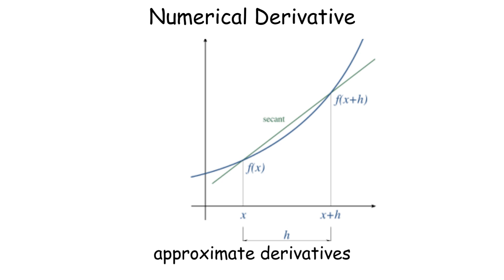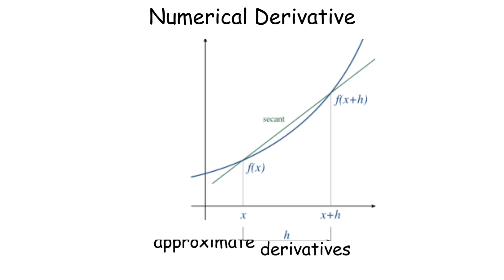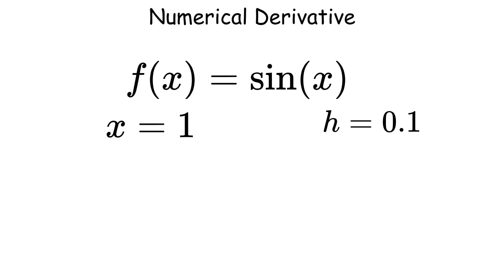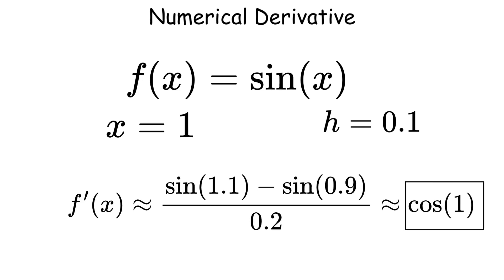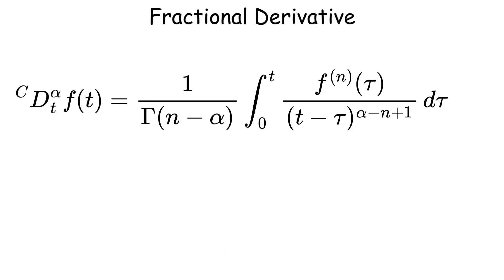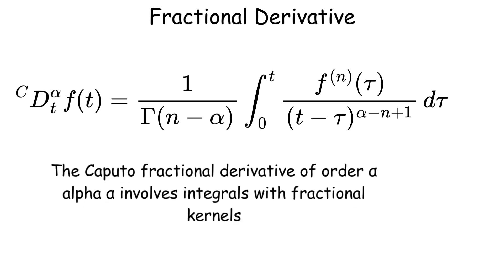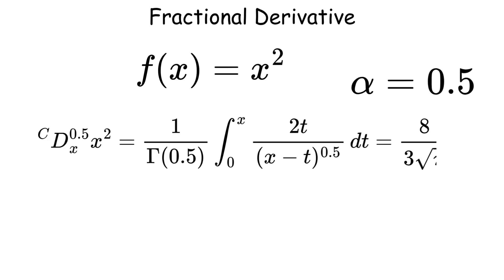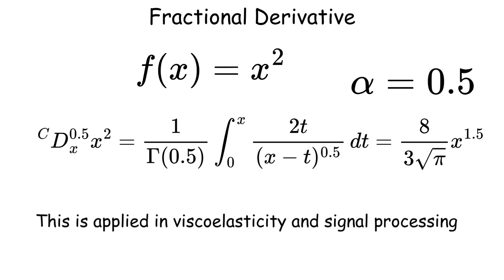Numerical derivatives approximate derivatives using discrete data, ideal for computational applications. The central difference formula provides such an approximation — for example, for f of x equals sine of x at x equals 1 with h equals 0.1, the approximation yields cosine of 1. This is widely used in simulations and data analysis. Fractional derivatives generalize differentiation to non-integer orders, capturing intermediate behaviors. The Caputo fractional derivative of order alpha involves integrals with fractional kernels. For f of x equals x squared, the fractional derivative of order alpha equals 0.5 yields a non-integer power function, reflecting memory effects. This is applied in viscoelasticity and signal processing.